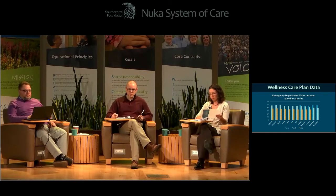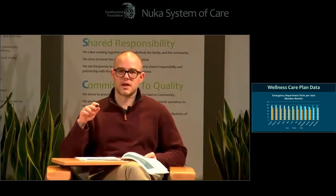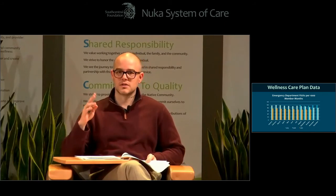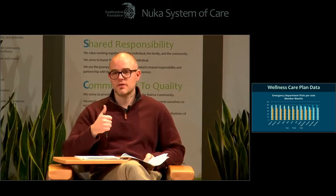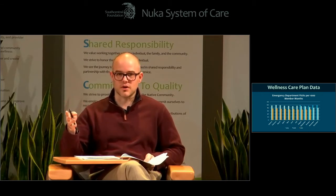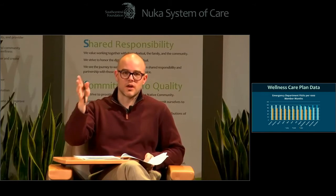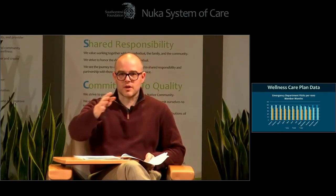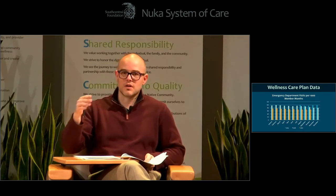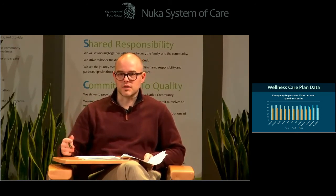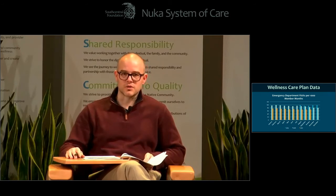This is data showing emergency department visits per thousand member months. If you look past the halfway point on the graph, the dark blue bars represent the earlier period, the light blue continues the timeline, and the orange/yellow bars continue from there. The sequential timeline shows how ED rates have been affected as wellness care plans were implemented over time. Once folks are on a wellness care plan, their ED visits tend to drop fairly significantly.